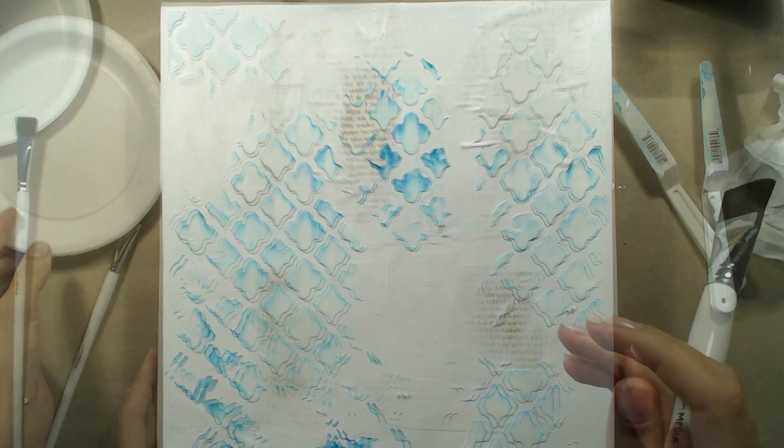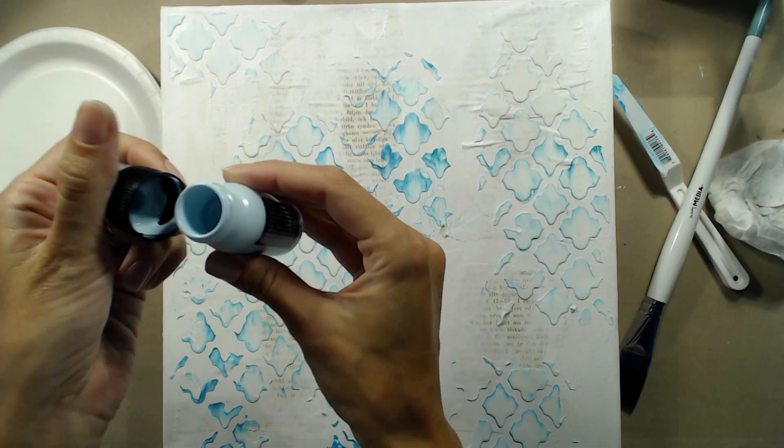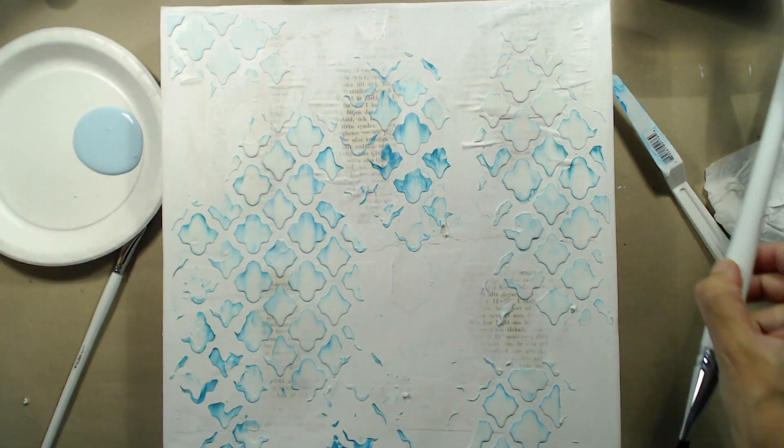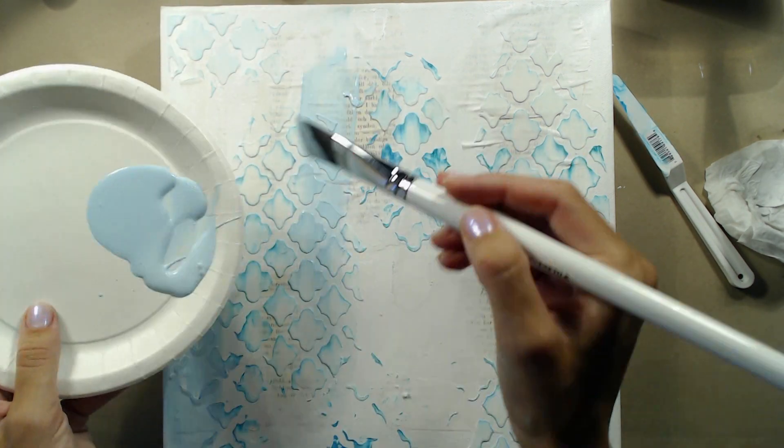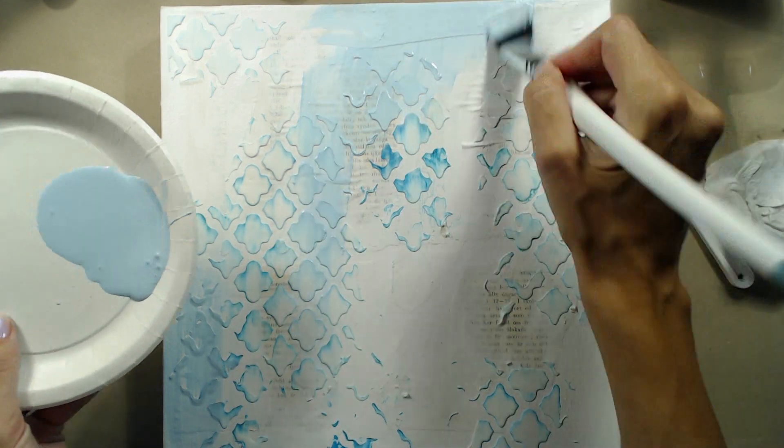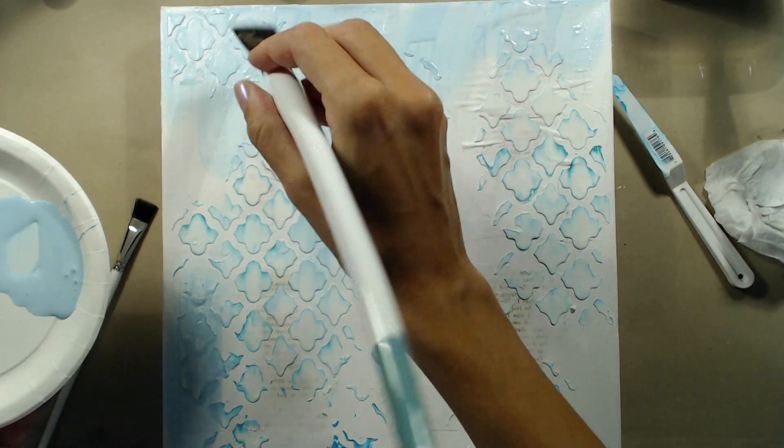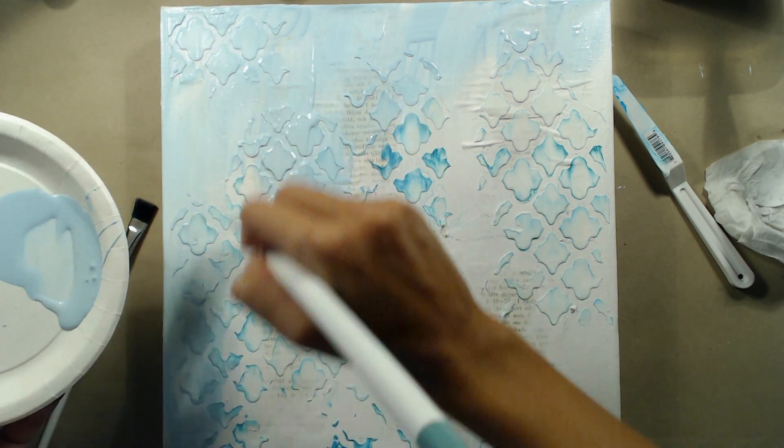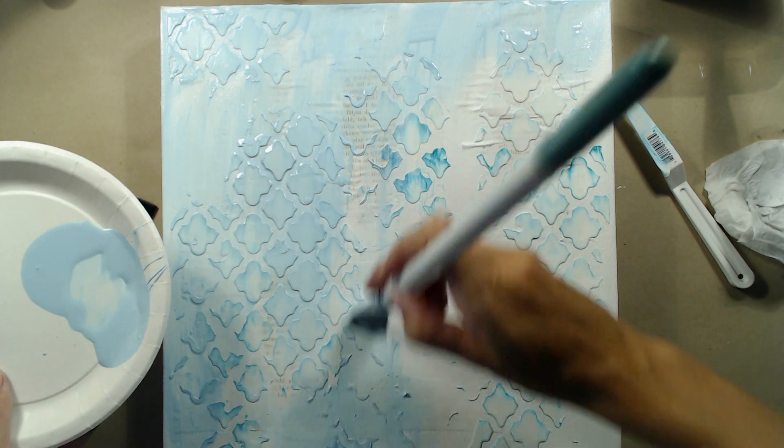Then when it was dry enough for me to touch without smearing it I went ahead and started adding my colors. The first color I'm using is tumbled glass distress ink. The distress inks have a dabber top but I'm not going to use that. Instead I'm just pouring some of the ink onto a plate and use my paintbrush to add the paint to the canvas. This way I can get uneven and visible brush strokes on the canvas and that is exactly the kind of effect that I'm going for.